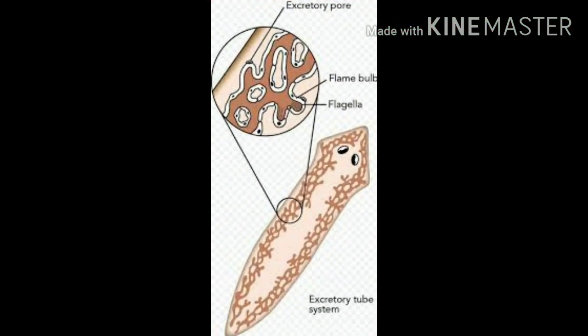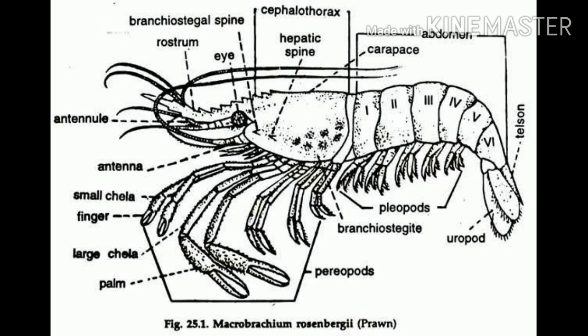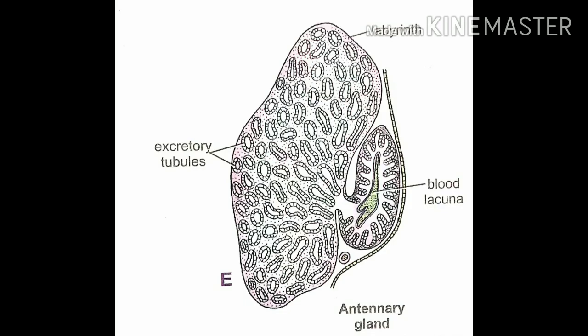The members of phylum Platyhelminthes, like planaria, have excretory organs called the flame cells. Similarly, in certain organisms like prawns which are crustaceans, the excretory organs are known as the antennal glands or the green glands.